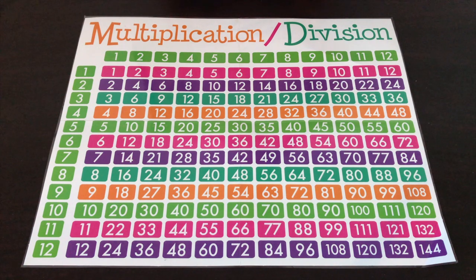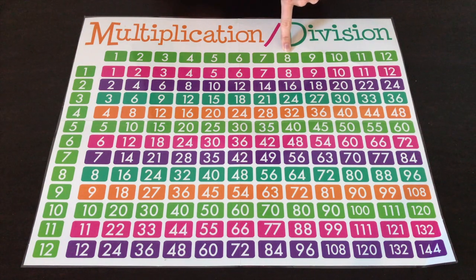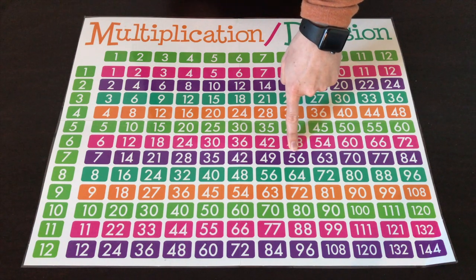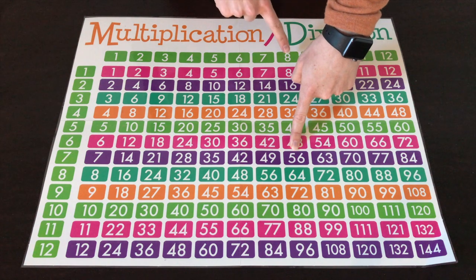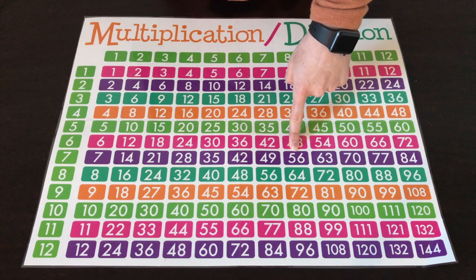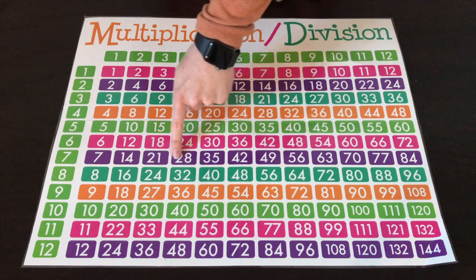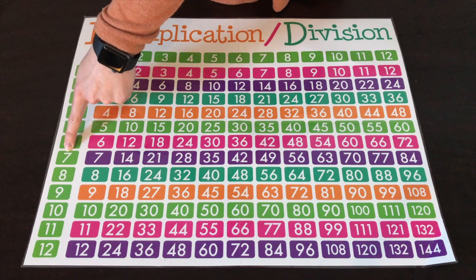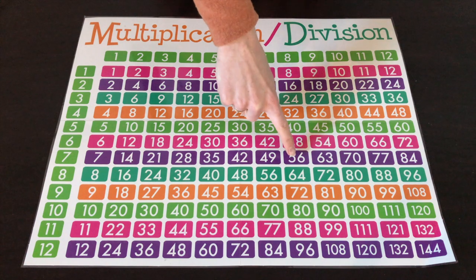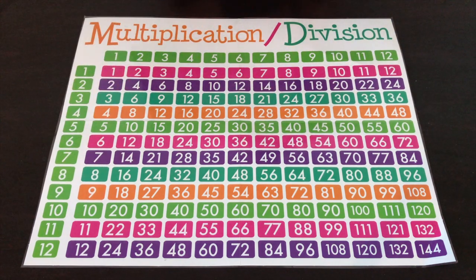So let's say we have the problem 56 divided by 8. I would tell a child to start at the 8 — put your finger on the top where the 8 is, and then slide your finger down until you reach 56. Now we've used our two numbers, but we still haven't found the answer. At this point I tell the child to slide their finger across, and we get to 7. The child now knows that 56 divided by 8 is 7, because those numbers are all connected on the multiplication chart.